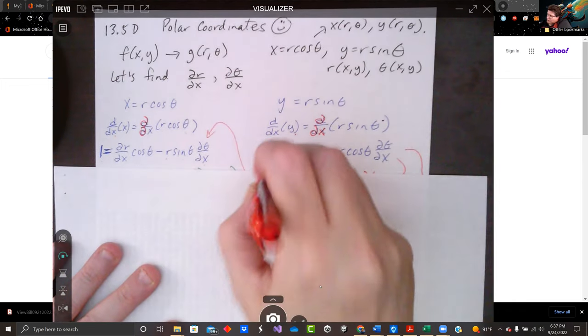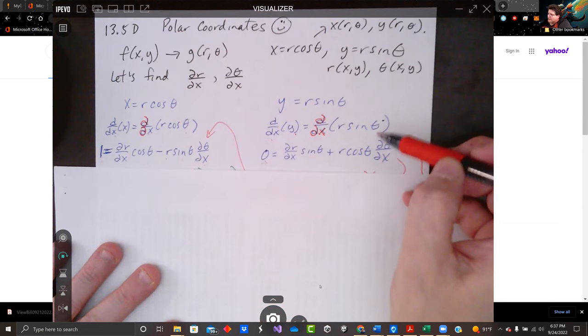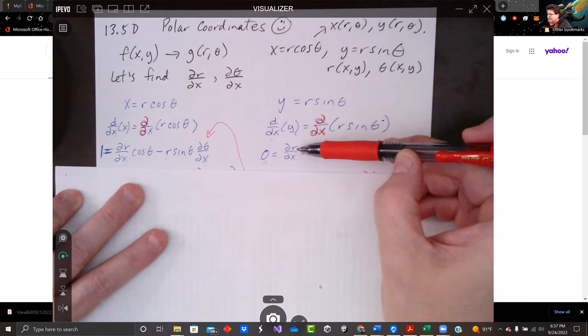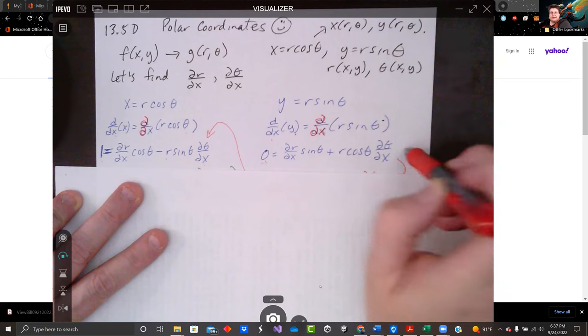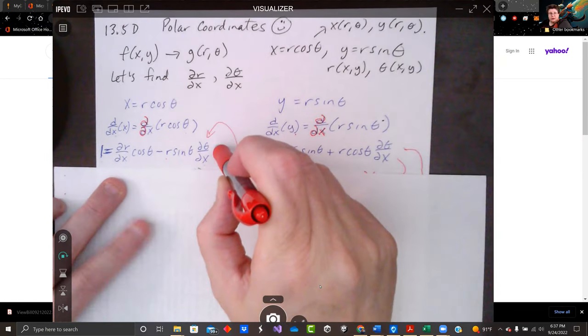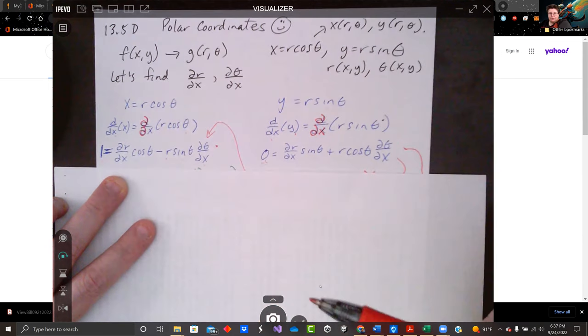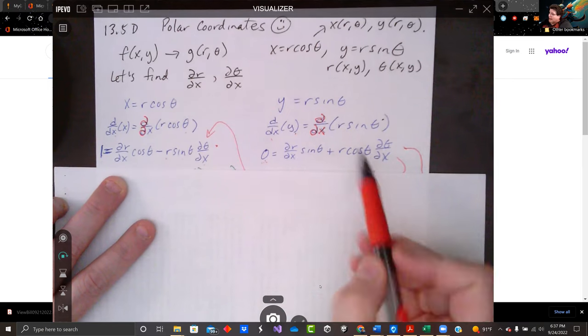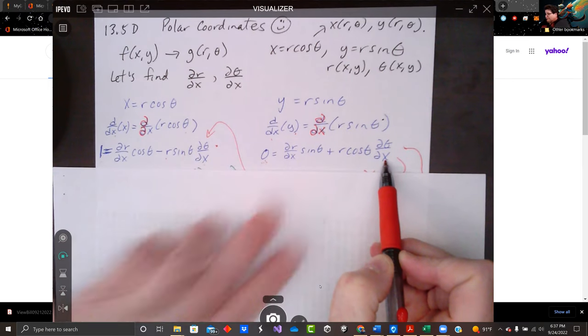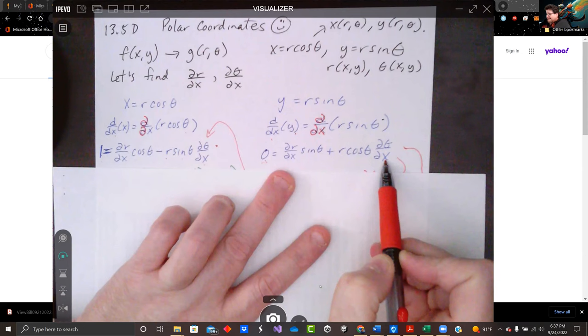I like that this right one equals zero. What I'm going to do to calculate dr/dx, I'm going to solve for d theta dx, plug it in over here, and then I'll just have dr/dx. I'll do the same thing when I want to find d theta dx. I will isolate d theta dx by solving for dr/dx.